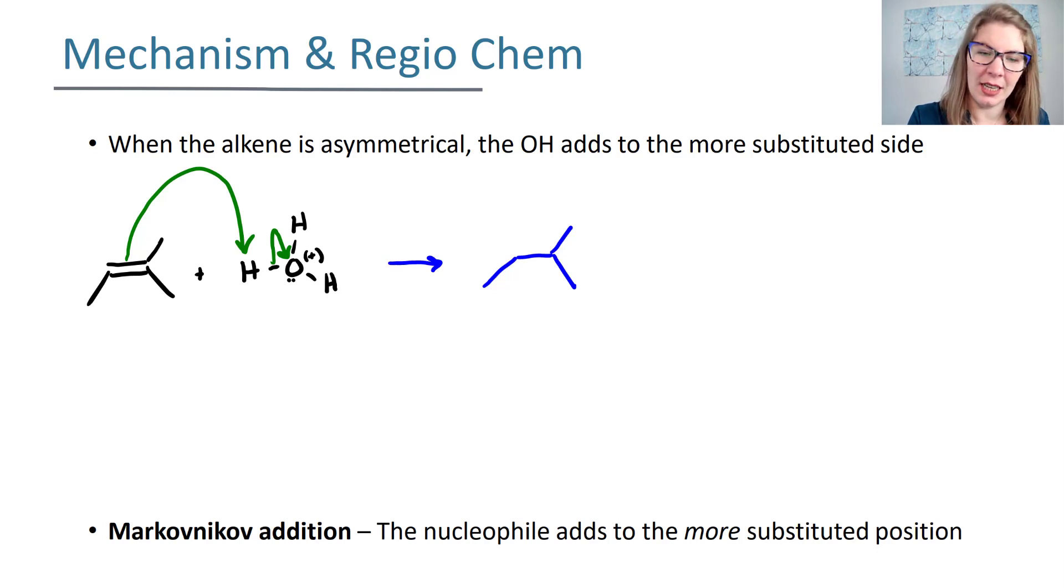Your hydrogen can add here, which would make your carbocation at a tertiary position. Or your hydrogen could add here, which would make your carbocation secondary. We already know that tertiary carbocations are more stable than secondary, so the first compound that I drew is what's going to actually occur because that one is more stable.